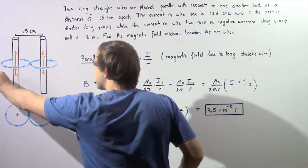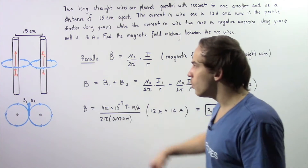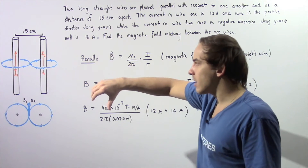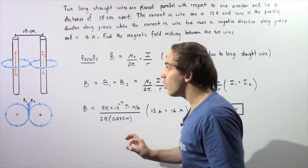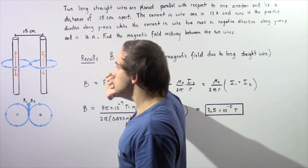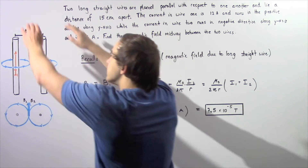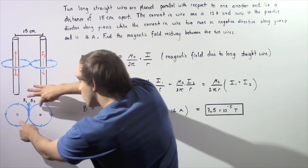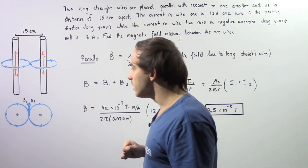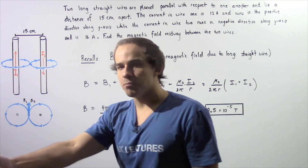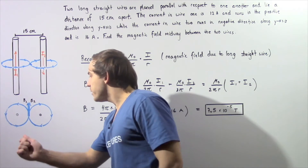For wire one, the magnetic field runs in a counterclockwise direction. For wire two we flip our hand because the thumb points downward, giving a magnetic field that is a concentric circle in the clockwise direction. In the top-to-bottom view, wire one is shown with a dot — current coming out of the board — and wire two with an X — current going into the board.